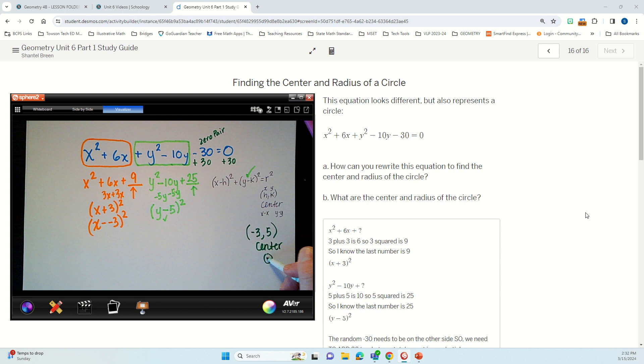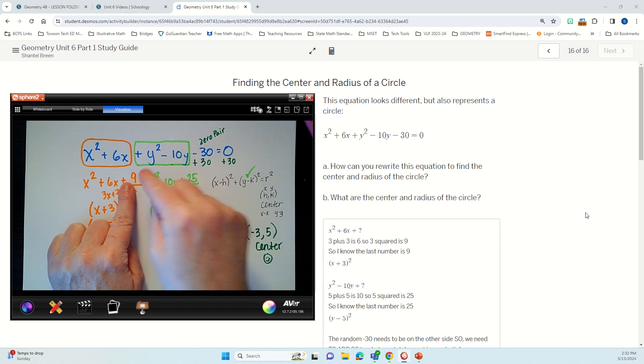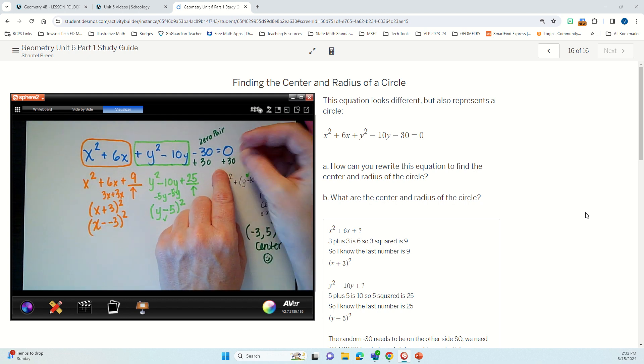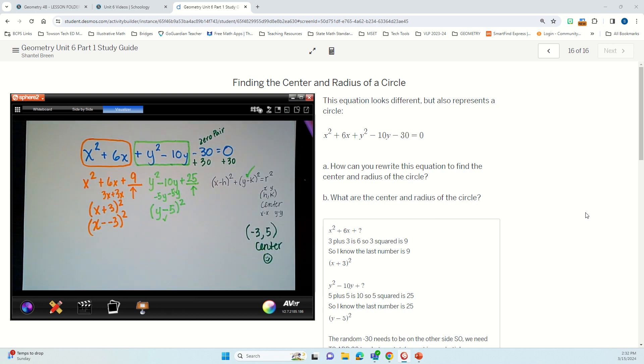Yay. Okay, I found the center. I have half the problem. Now I just need to get the radius. Okay, so I know my radius is going to be these numbers plus this extra 30. So I have that negative 30. So I'm adding 30. I'm adding 25, and I'm adding 9 to see what is actually on this side, because whatever is on this side is going to be equal to whatever is on this side. All right, so let's add them up.